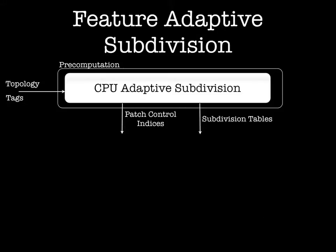Our full algorithm proceeds as follows. First, as a pre-computation step, we perform adaptive subdivision on the CPU to produce patch control indices and subdivision tables that describe the adaptive subdivision process. This step is only dependent on the mesh topology and tags such as creases or hierarchical edits, and the indices and tables are loaded onto the GPU only once.